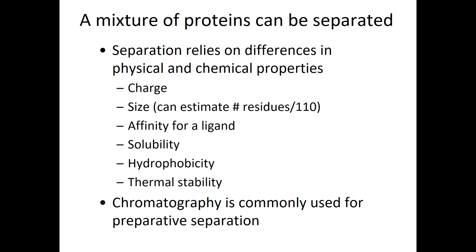Once you have that mixture of proteins, you can begin to separate them based on charge, size, or affinity. You can estimate the size of a protein by taking the number of amino acid residues and dividing by 110, which is about the size of a normal amino acid residue. You can also use affinity if your protein bonds to something, or use solubility and whether the protein is hydrophobic.